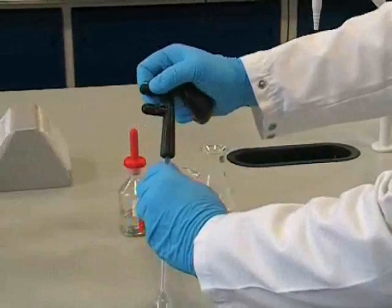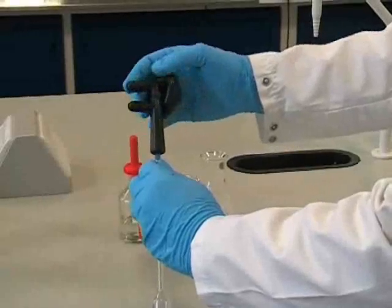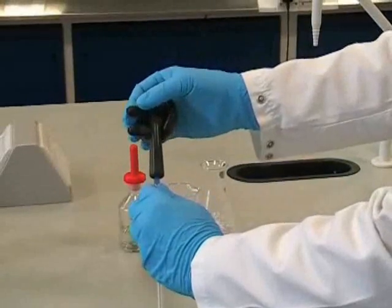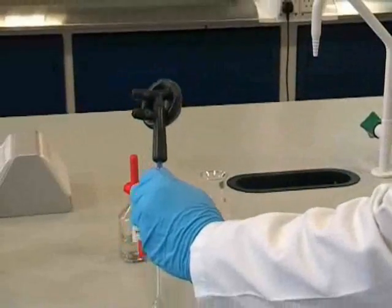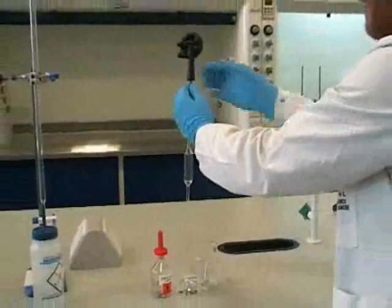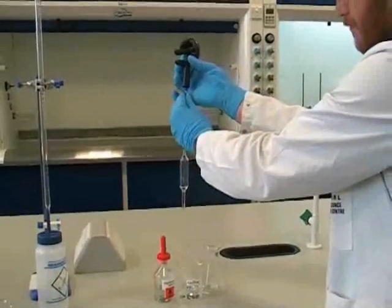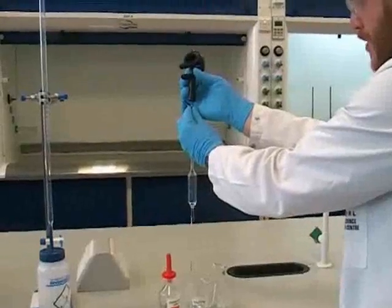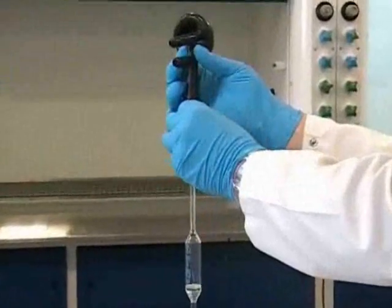Now we can press the appropriate button on the pipette filler and gently squeeze the bulb to expel the air. We're now able to draw up some of our solution into the pipette. We place the pipette into the solution and press the appropriate button on the filler, and this draws the solution into the pipette.